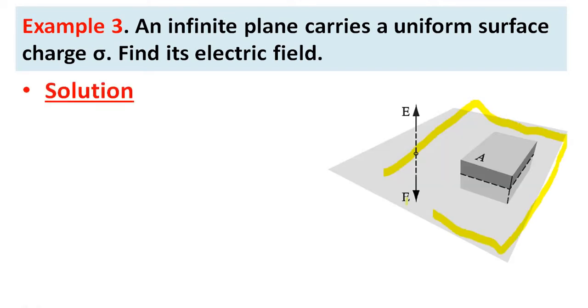This is the infinity sheet. It carries a uniform surface charge sigma. In order to find the electric field by using Gauss law, we need to consider a Gaussian pillbox. This is the Gaussian pillbox. The Gaussian pillbox is above the sheet and half of the portion of the pillbox is below the sheet.